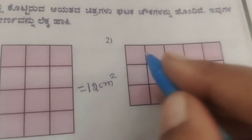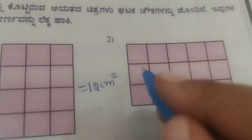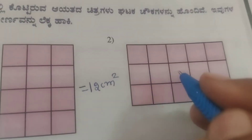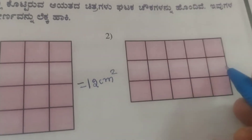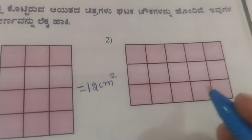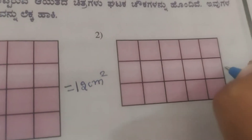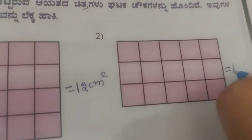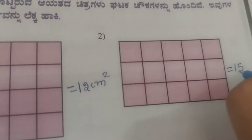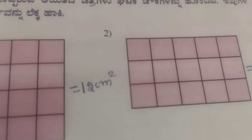Next figure, counting: 1 through 15. So this area is 15 square units. Third problem, counting: 1 through 24. So this area is 24 square units.